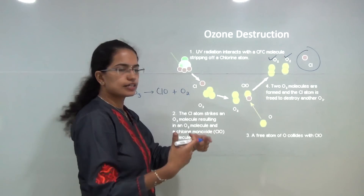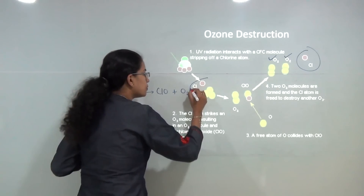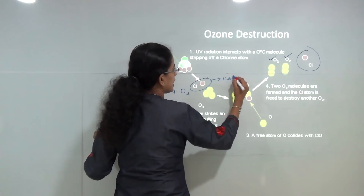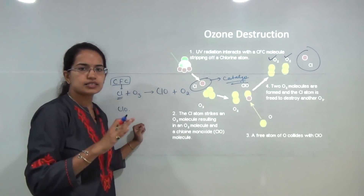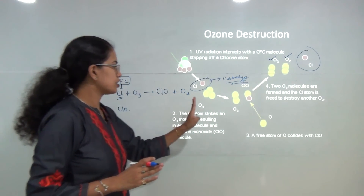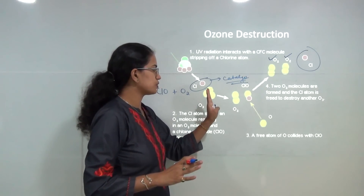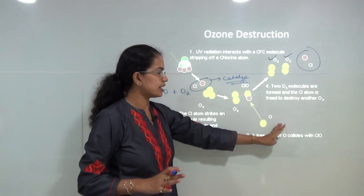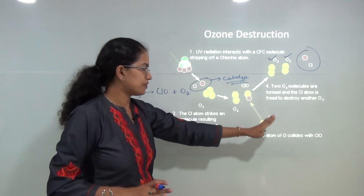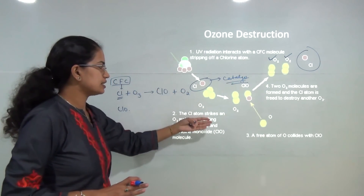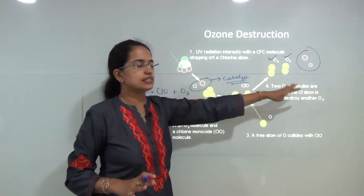Chlorine acts as a catalyst, increasing the rate of the reaction. The disintegration of ozone into an oxygen molecule and free oxygen radicals increases continuously, and the free radical of chlorine is released each time.